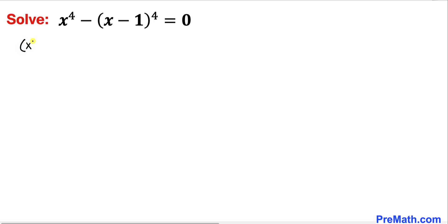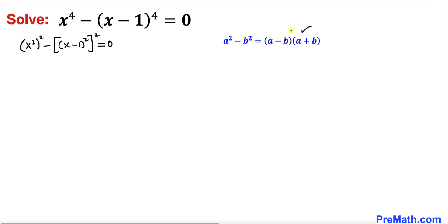Therefore this equation becomes (x squared) whole squared minus ((x minus 1) squared) whole squared equal to 0. Now let's recall the famous difference of two squares identity: a squared minus b squared equals (a minus b)(a plus b). So the left hand side can be written as (x squared minus (x minus 1) squared) times (x squared plus (x minus 1) squared).